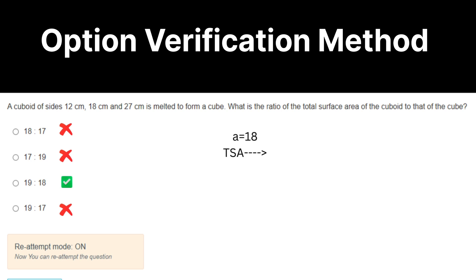Cuboid of sides 12, 18, 27. 12 into 27, which is 324. Which means side of the cube is 18. Since it is 18 cube, so TSA will be 6 times 18 squared. So there is no way that we can get 17 or 19 as TSA of cube. So you can directly mark it as option 3.